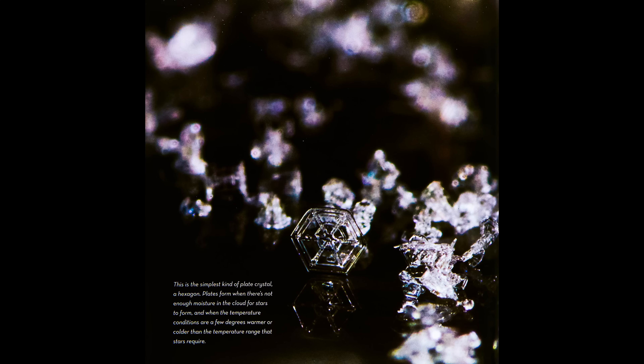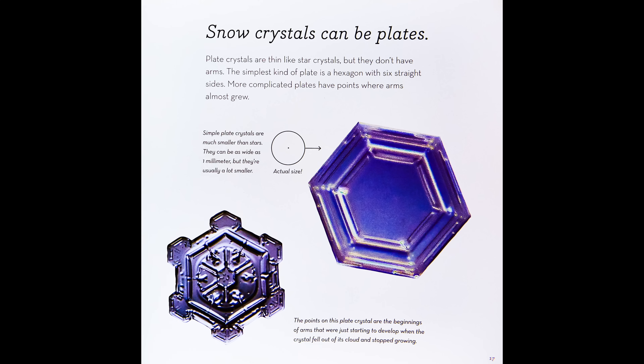This is the simplest kind of plate crystal — a hexagon. Plates form when there is not enough moisture in the cloud for stars to form, and when the temperature conditions are a few degrees warmer or colder than the temperature range that stars require. Plate crystals are thin like star crystals, but they don't have arms. The simplest kind of plate is a hexagon with six straight sides.